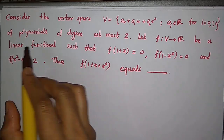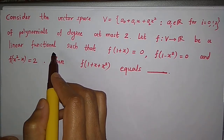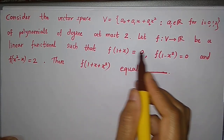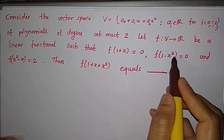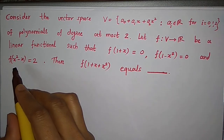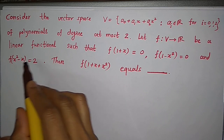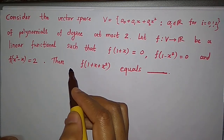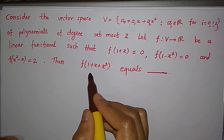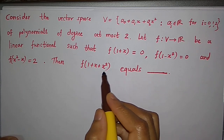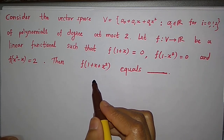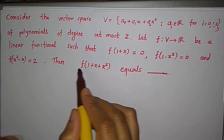We are given a function f from V to ℝ which is a linear functional such that f(1+x) = 0, f(1−x²) = 0, and f(x²−x) = 2. We have to find the value of f(1+x+x²).